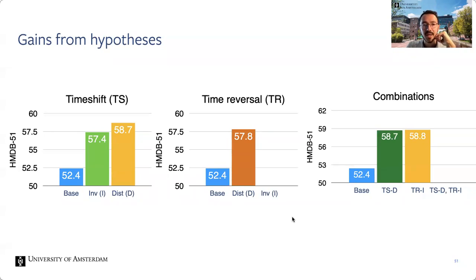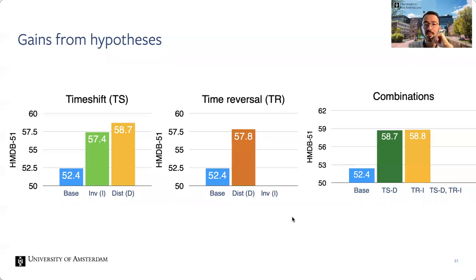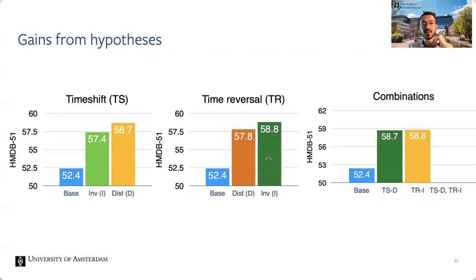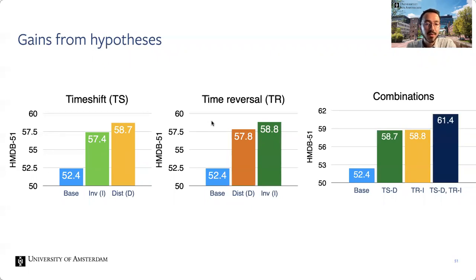For the time shift transformation, we see gains from being distinctive rather than invariant, reaffirming similar results from AVTS. The model profits from differentiating different points in time — for example, between an athlete running versus an athlete landing in a sandpit in the same video. For time reversal, we see that invariance is a better learning signal, as many actions like moving an object are inherently invariant to time reversal. Together, composing these two transformations gives a further boost.